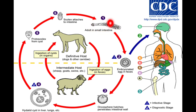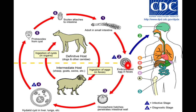These cycles circulate in nature between dogs and sheep. However, sometimes a human being accidentally ingests embryonated eggs present in the feces of infected dogs. When the human ingests the eggs, the larvae hatch in the intestines, and the oncosphere — which has the power of penetration — penetrates through the intestinal wall. They can reach the liver, lungs, bones, brain, or many other organs, but most commonly go to the lungs or liver.